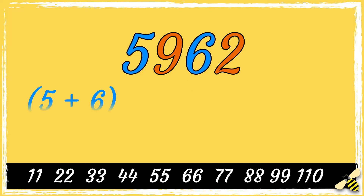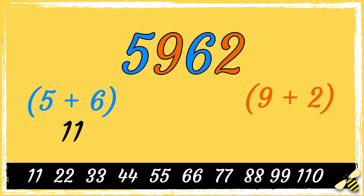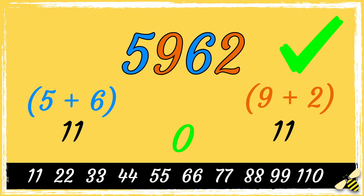First let's add the odd digits: 5 add 6 equals 11. Then add the even digits: 9 add 2, which is also 11. The difference between 11 and 11 is 0. 0 is divisible by 11, so that means that 5962 is divisible by 11.